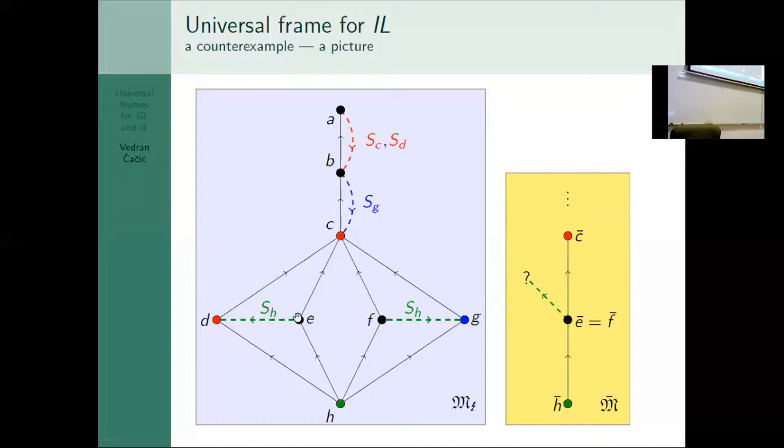The idea of the argument: E and F are modally equivalent, so they must map to the same world in the universal model. E bar must equal F bar. But then that world must have a green H bar arrow to some world which is somehow both D and G at the same time. It cannot be. Those worlds just serve to have D and G be not modally equivalent. It just cannot happen.